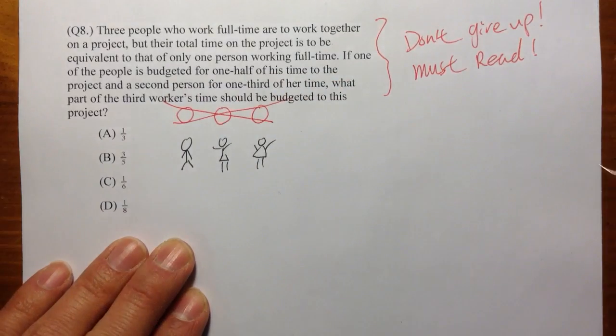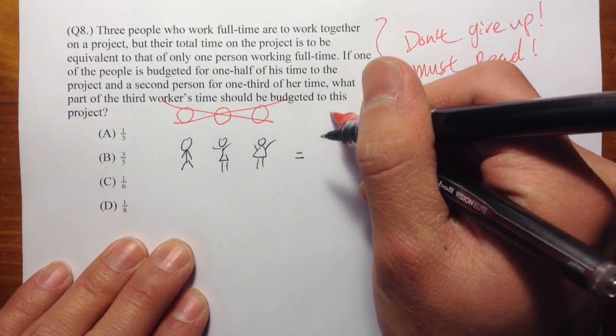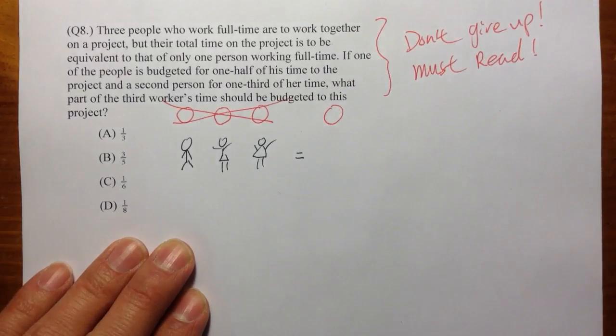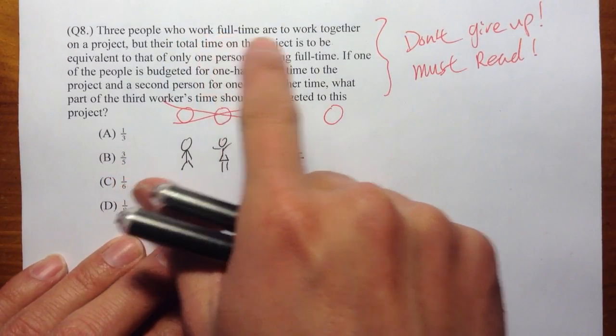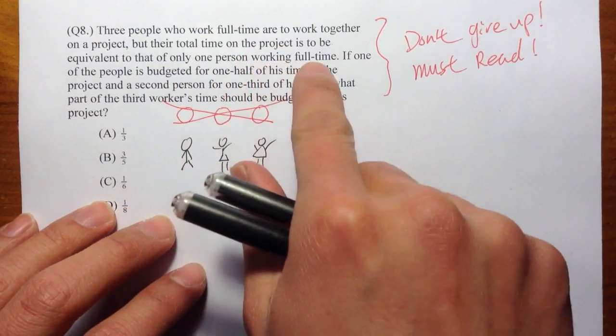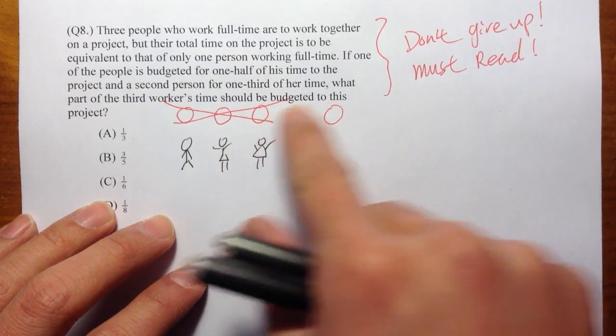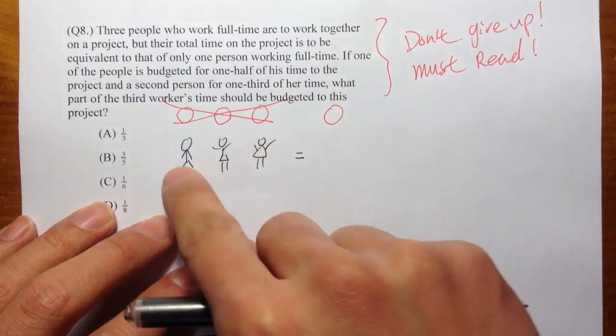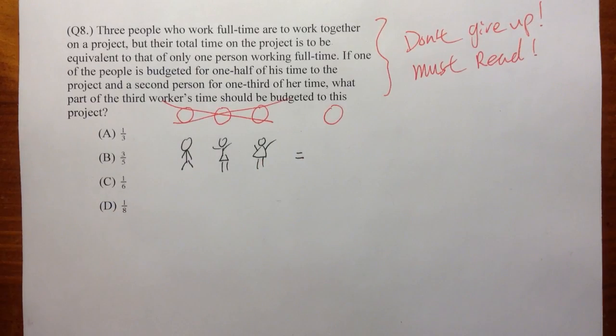All together, they are going to share only one pizza. So yeah, originally they were all working full time, but together they are budgeted to only one person working full time. So instead of three pizzas, we are just going to have one, and we are going to share among these three persons.